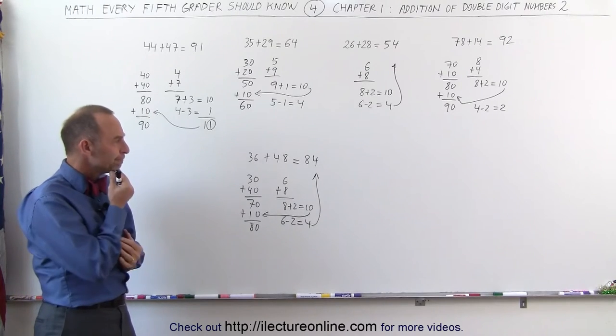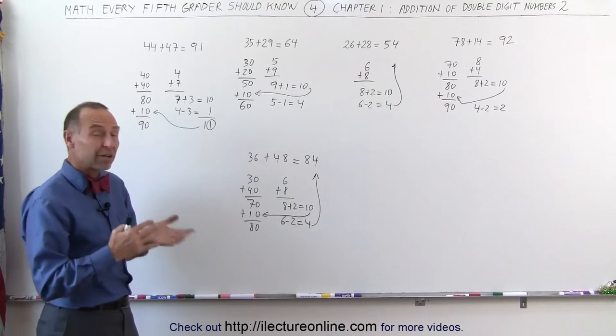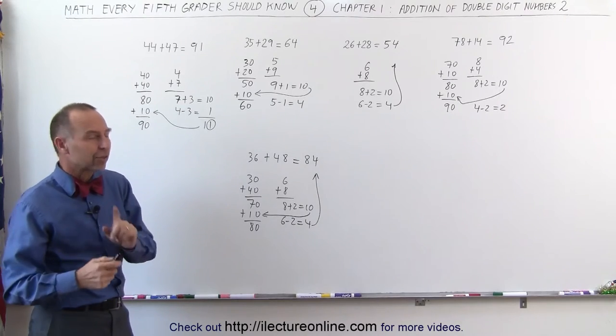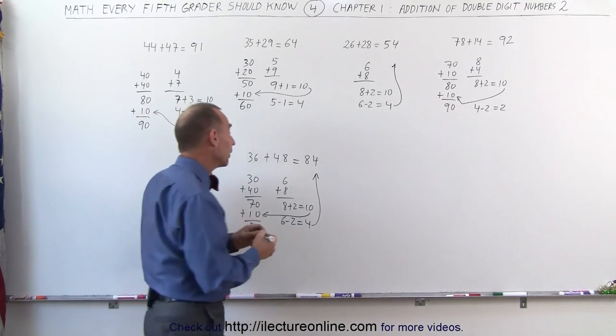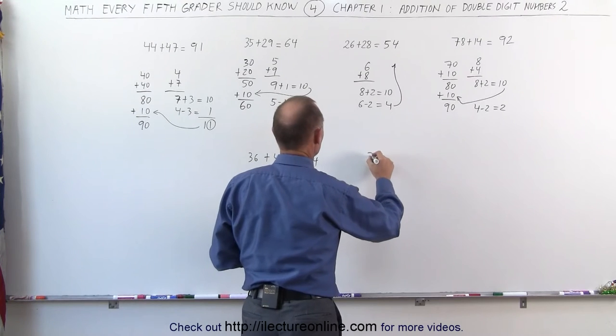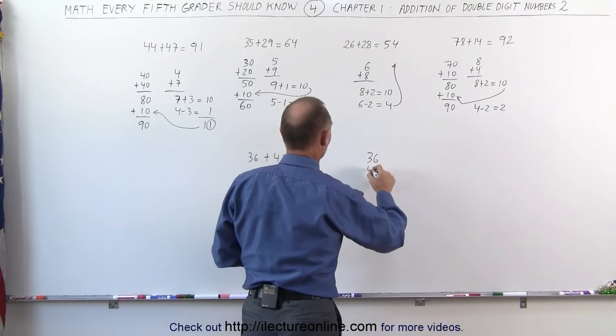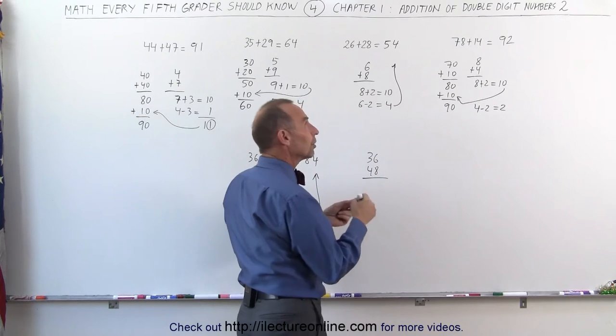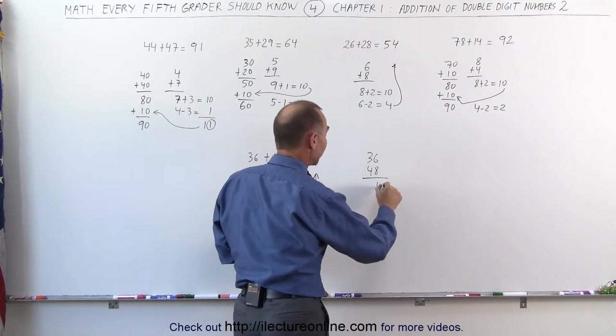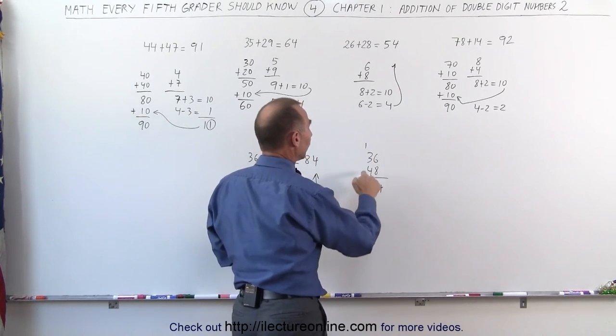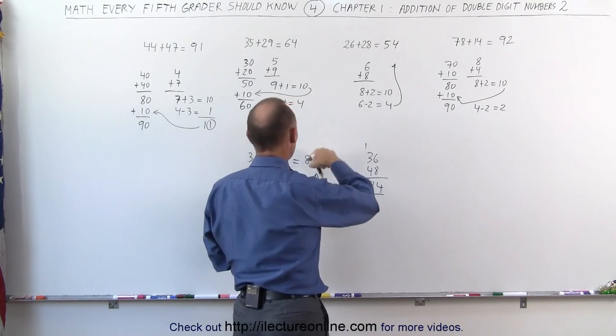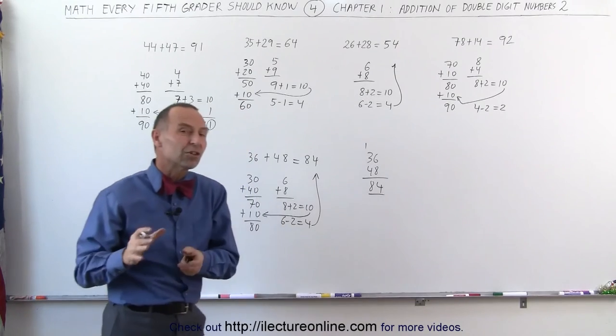Initially, you may say that seems like a lot of work and very complicated to do a simple problem like this. However, after lots of practice, it'll become a lot easier. Typically, what you would do is you write 36 plus 48, and then you go 6 plus 8 is 14. You write down the 4, you remember 1. 4 plus 3 is 7, plus 1 is 8, and you come up with 84. So that's how we traditionally do it. We have to take a piece of paper and write it by hand.